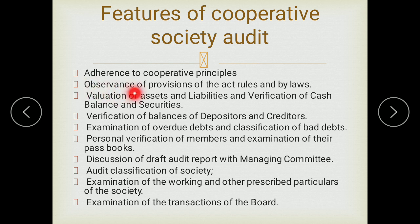The main features of cooperative society audit include: first, observance of cooperative principles — the society must operate as per cooperative principles such as helping each other and helping the members of the society. Second, observance of provisions of the Act, Rules and Bylaws — all cooperative society activities must follow the cooperative society acts and regulations. Third, valuation of assets and liabilities and verification of cash balance and securities — checking whether assets and liabilities are correctly valued as per the records.